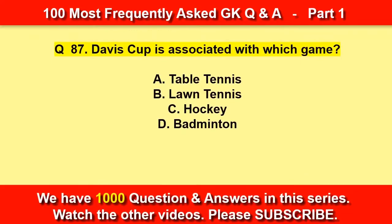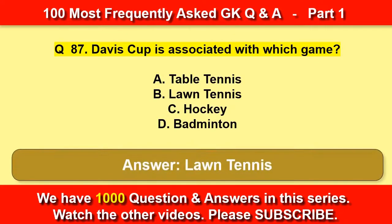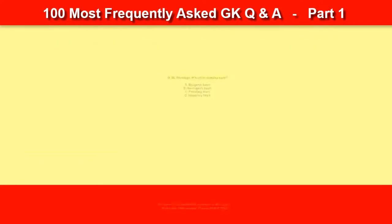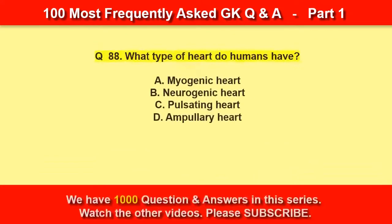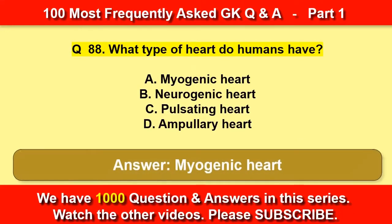Davis Cup is associated with which game? Lawn Tennis. What type of heart do humans have? Myogenic heart.